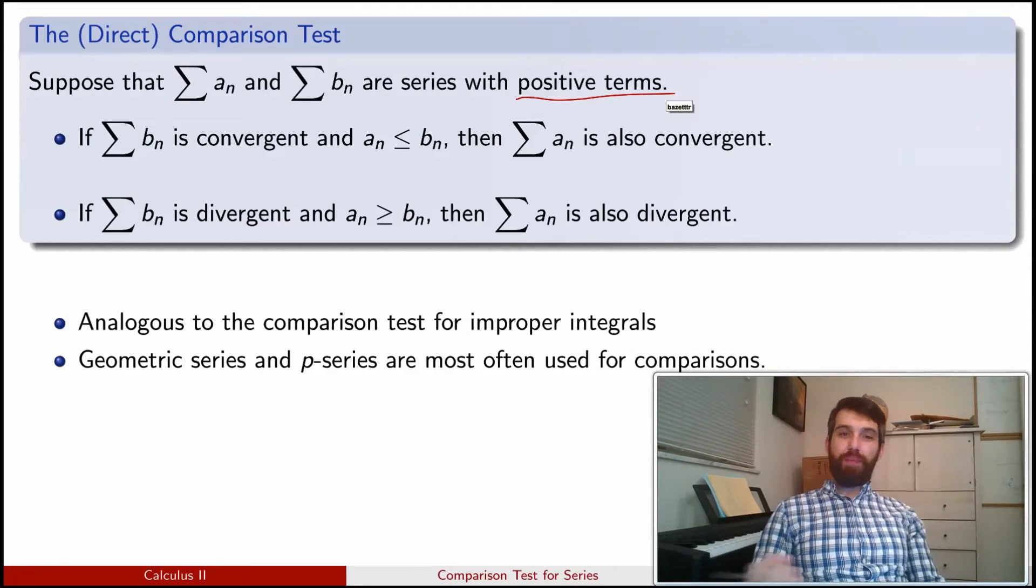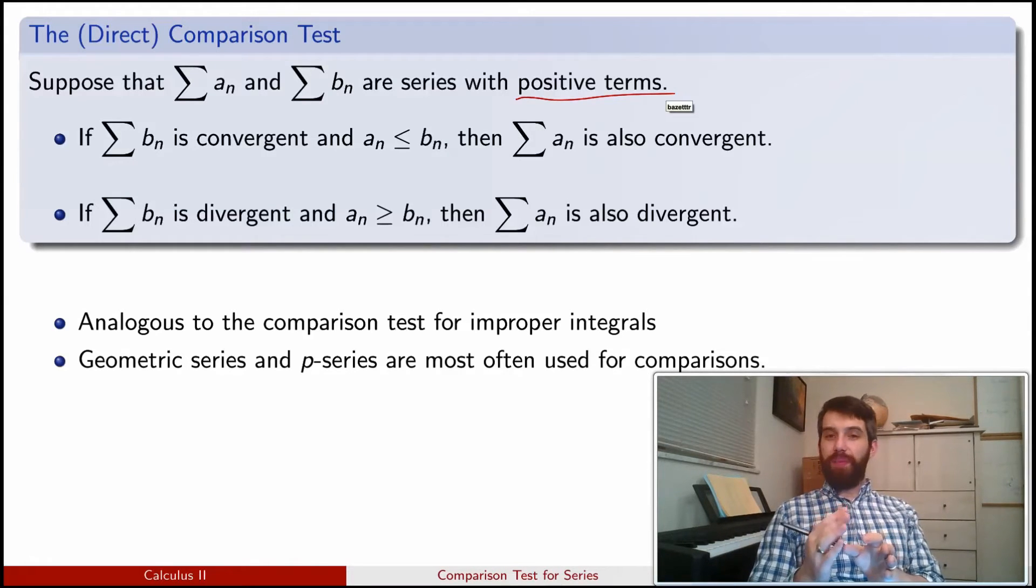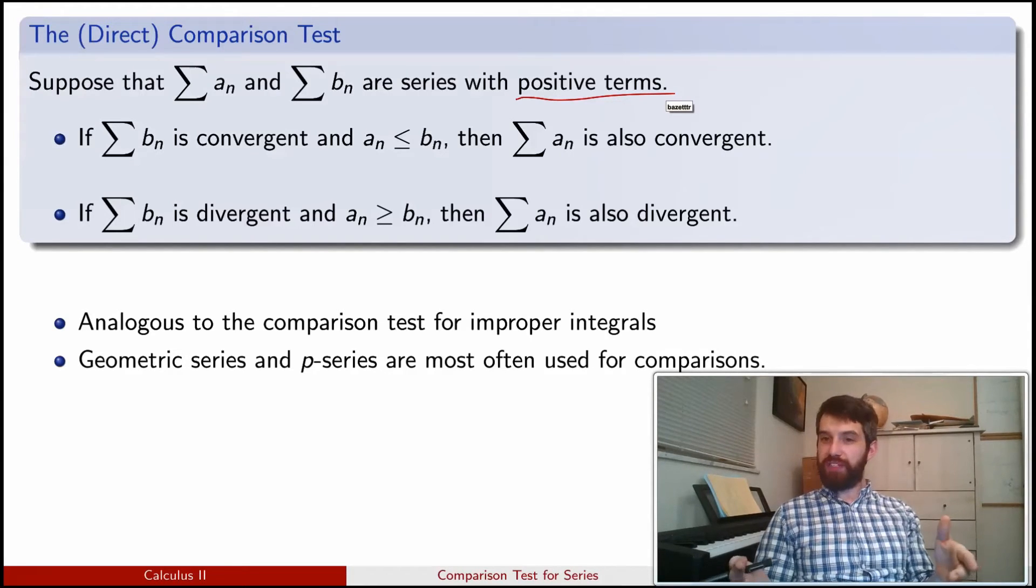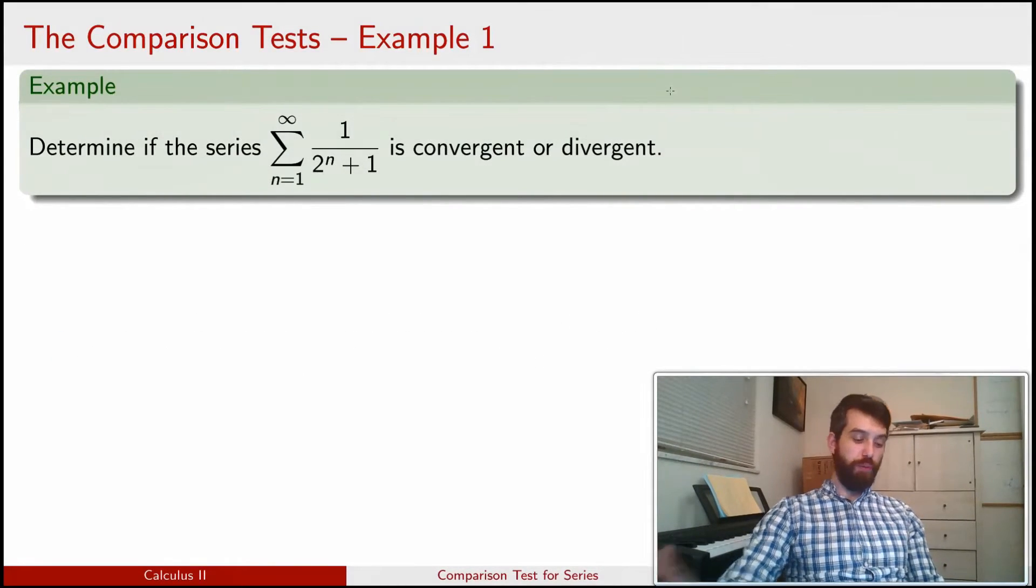So our basic method is going to be: look at what we have, write some inequality that compares it either to a P series or a geometric series, and then determine that it diverges or converges by the comparison to the geometric or the P series. So let's look at a specific example of this. The one that we were faced with before, the sum of 1 over 2 to the n plus 1.